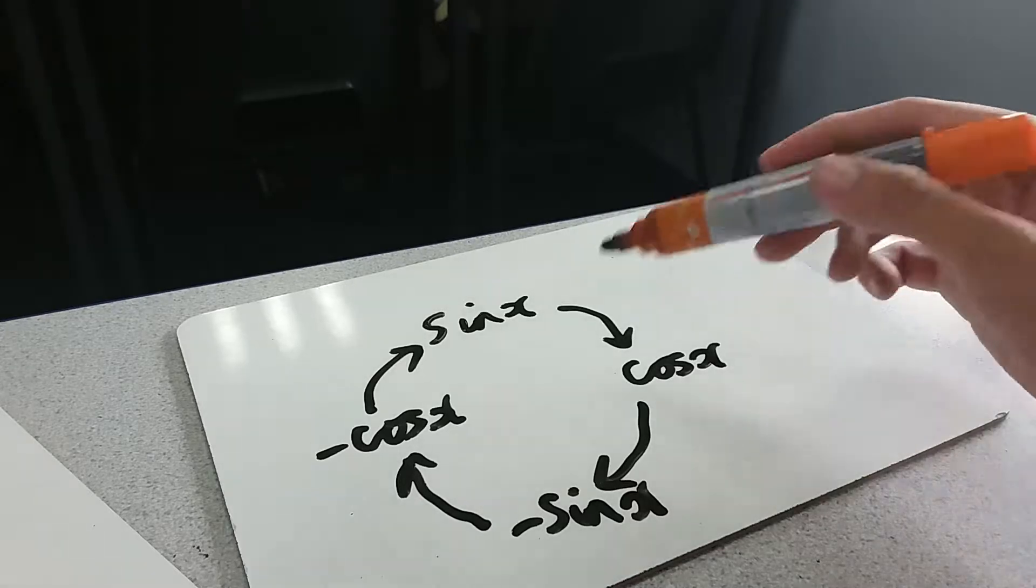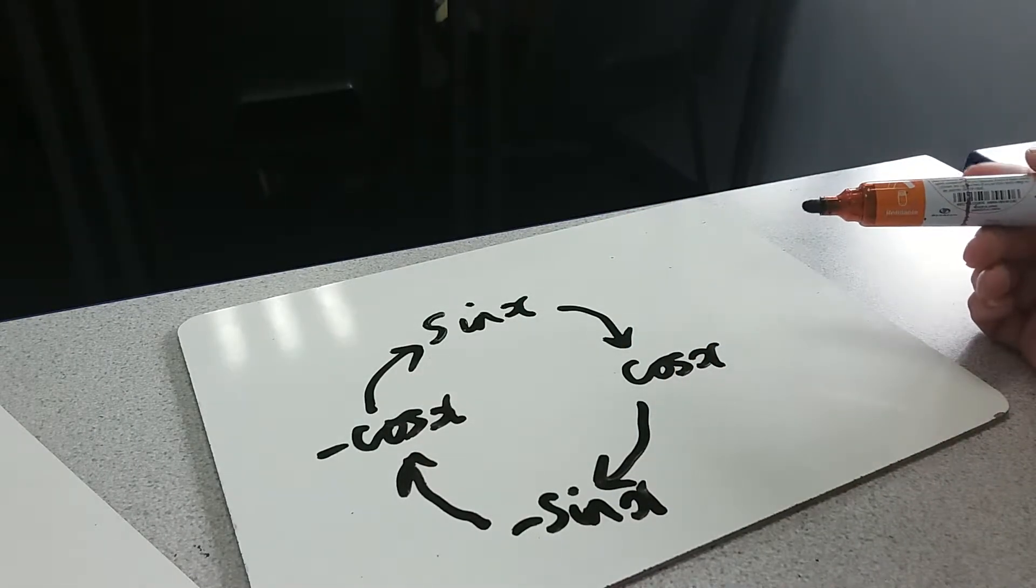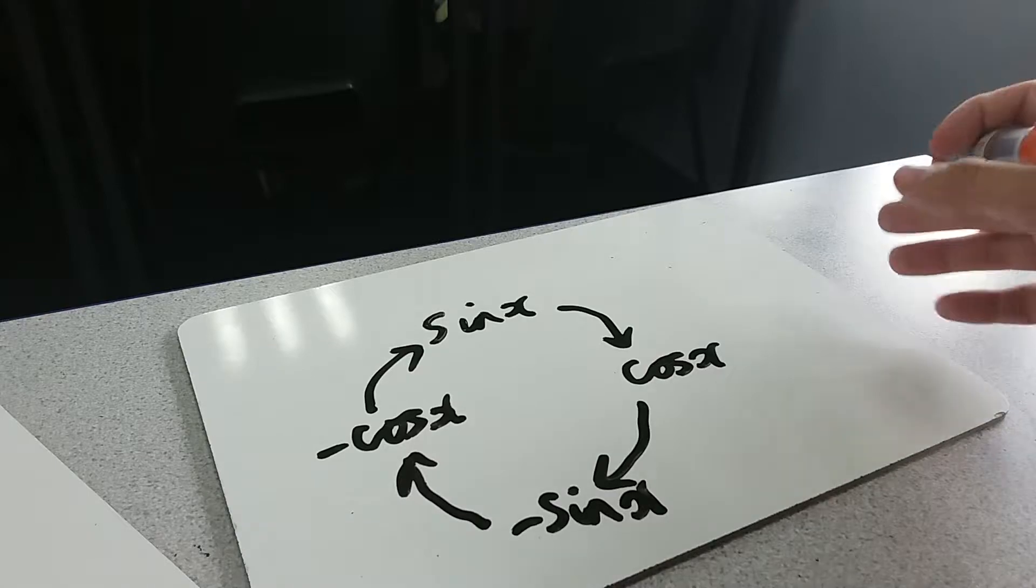My advice is when you've got trig around, just draw this little circle somewhere on your exam paper. It's just getting it the right way around. We're going to be using these functions to differentiate more complicated things with the chain rule. So I'll show you an example.